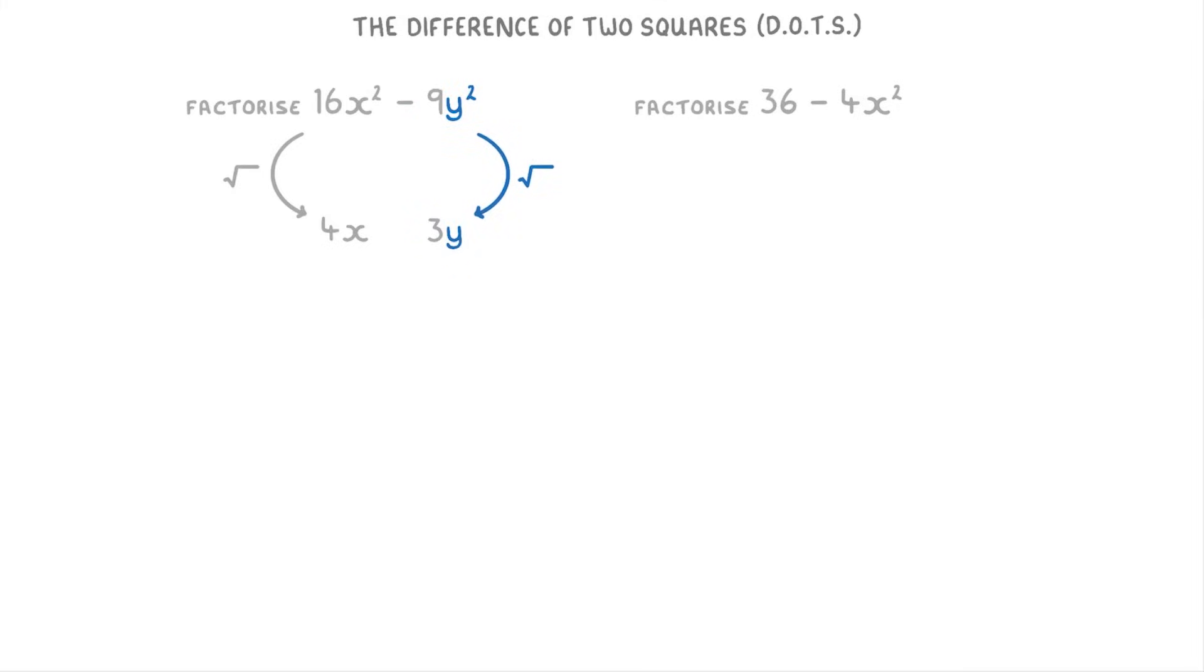The same thing works for 9y squared. Its square root is 3y because the root of 9 is 3 and the root of y squared is y. So all that's left is to put 4x and 3y into the two sets of brackets, so 4x plus 3y in the first and 4x minus 3y in the second.